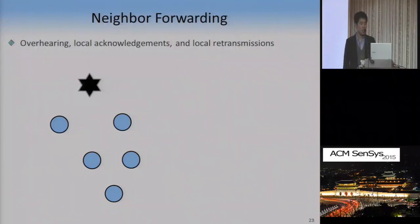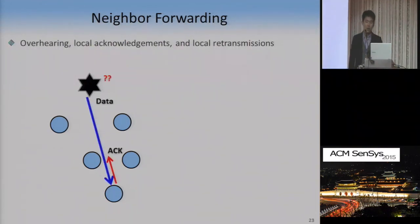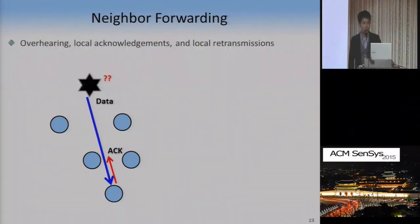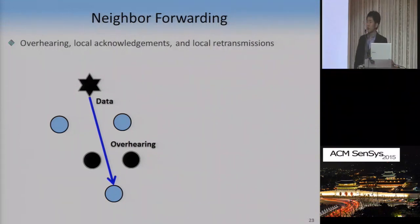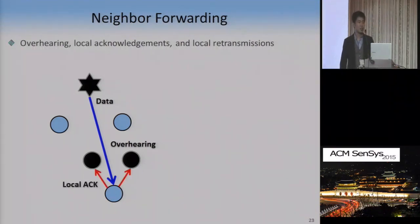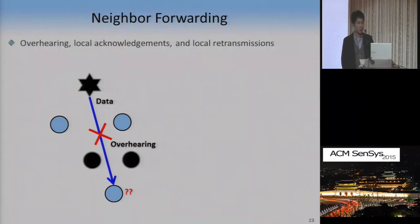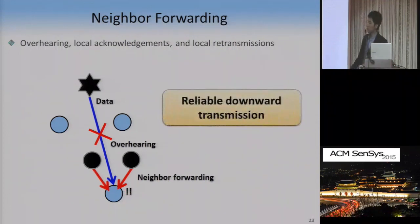The second attribute is neighbor forwarding. A problem in asymmetric transmission power-based networks is that the root is hard to confirm packet delivery because it cannot receive ACK packets from low-power nodes due to their limited transmission range. To alleviate this, we allow neighbor nodes of the destination to overhear the downward packet from the root and also ACK packets from the destination, and confirm packet delivery. If they fail to receive an ACK from the destination, they forward the overheard downward packet to the destination, resulting in reliable downward transmission.